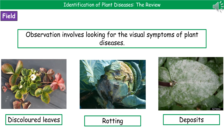Considering observation first, this is where we're looking for visual symptoms of plant diseases. We might be looking for discoloured leaves, as we can see on the left in our strawberry plant. It might be that parts of the plant have begun to rot, as shown in the middle picture. Or it could be those very noticeable deposits, like with the powdery mildew on the right. So observation covers anything we can visually see that's a clear indicator of something not being right with the plant.